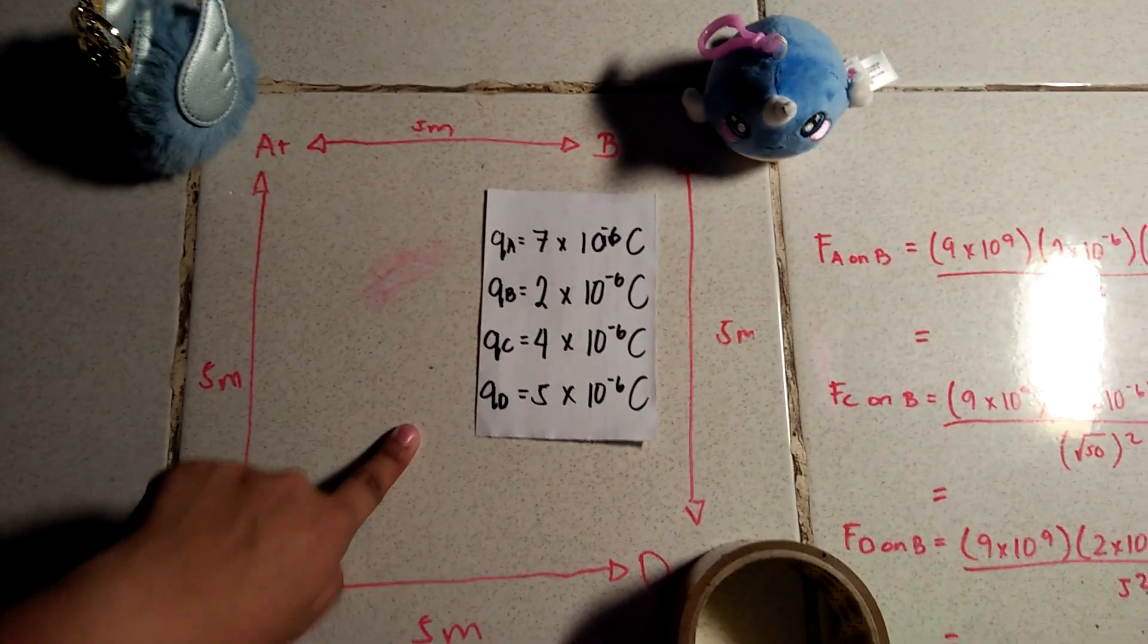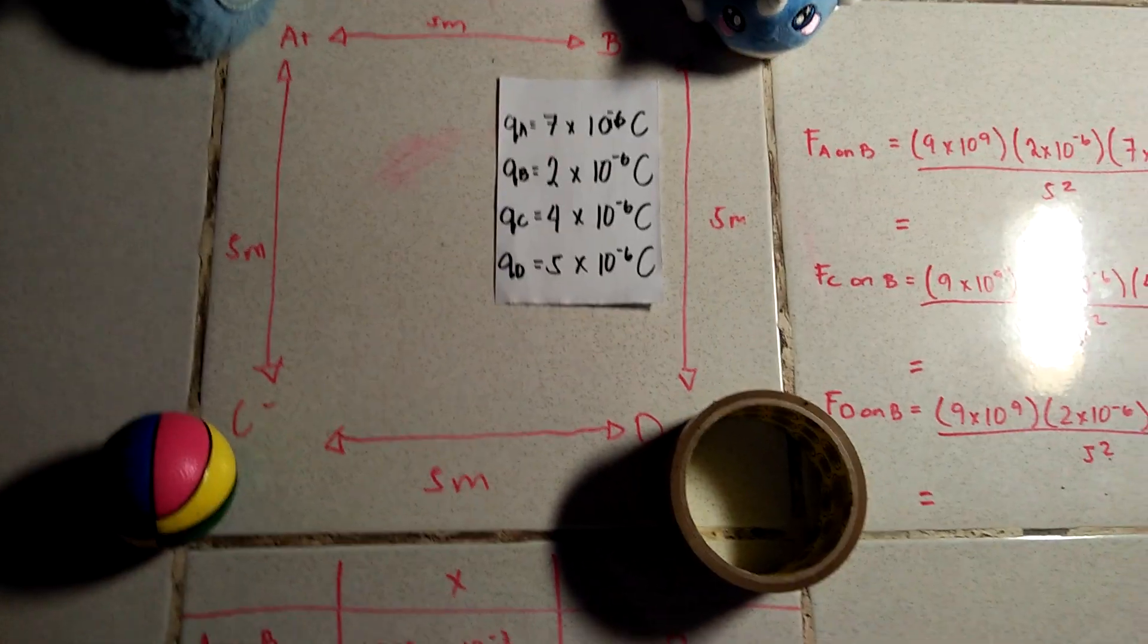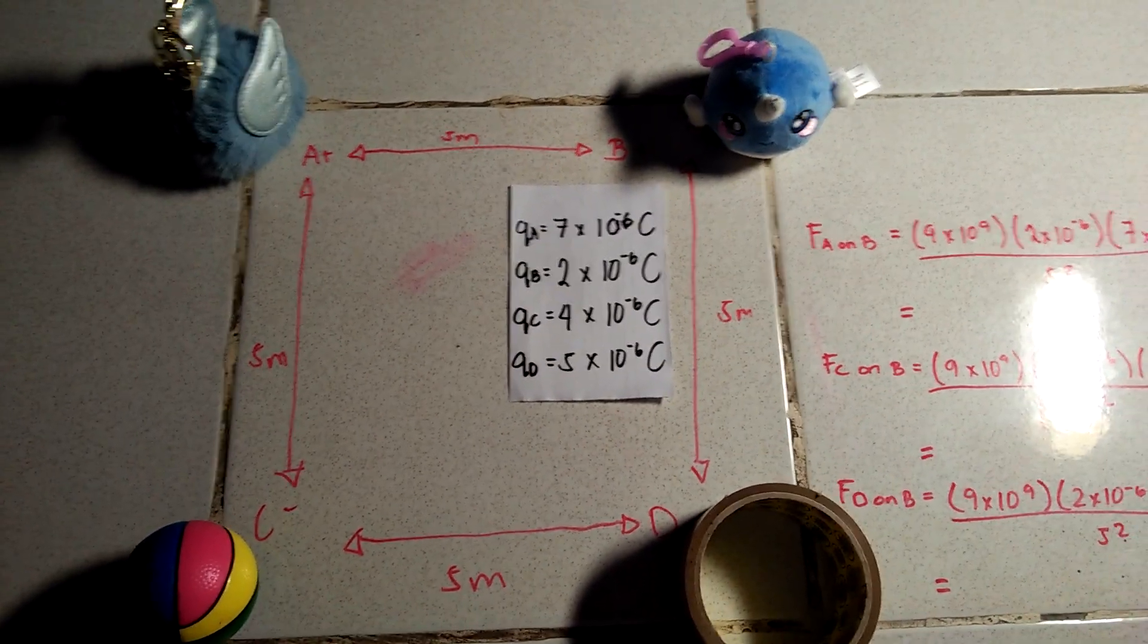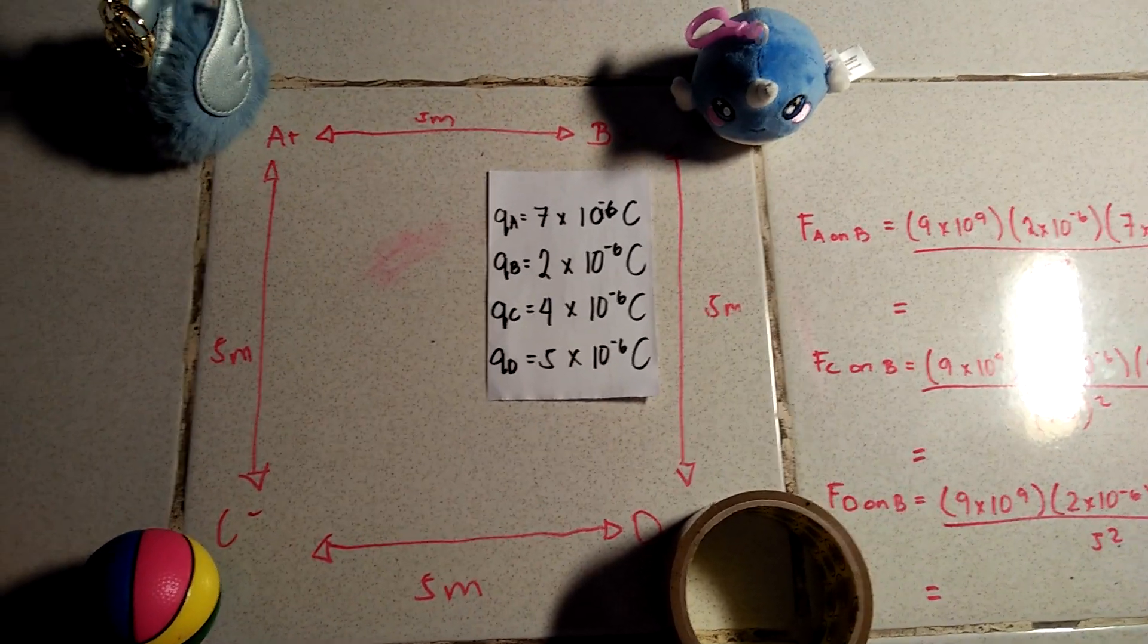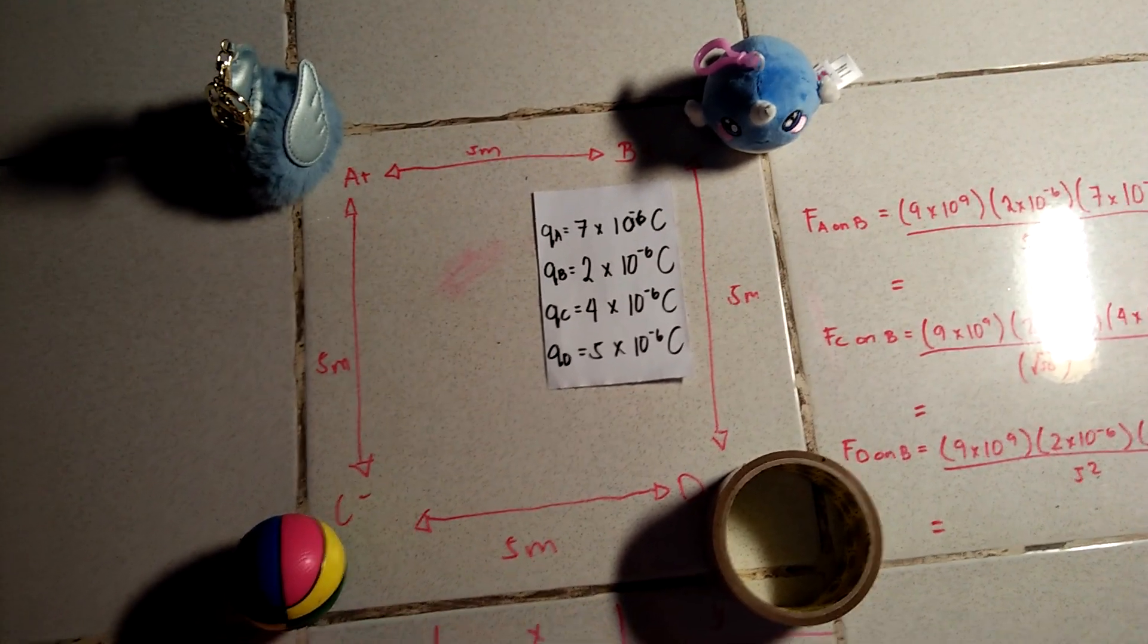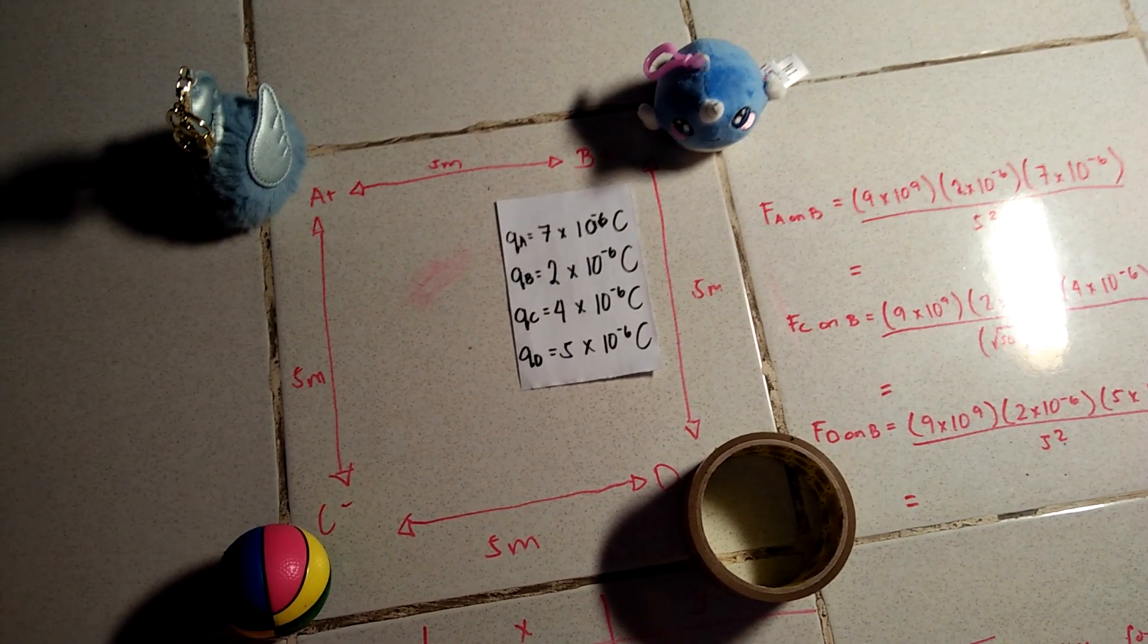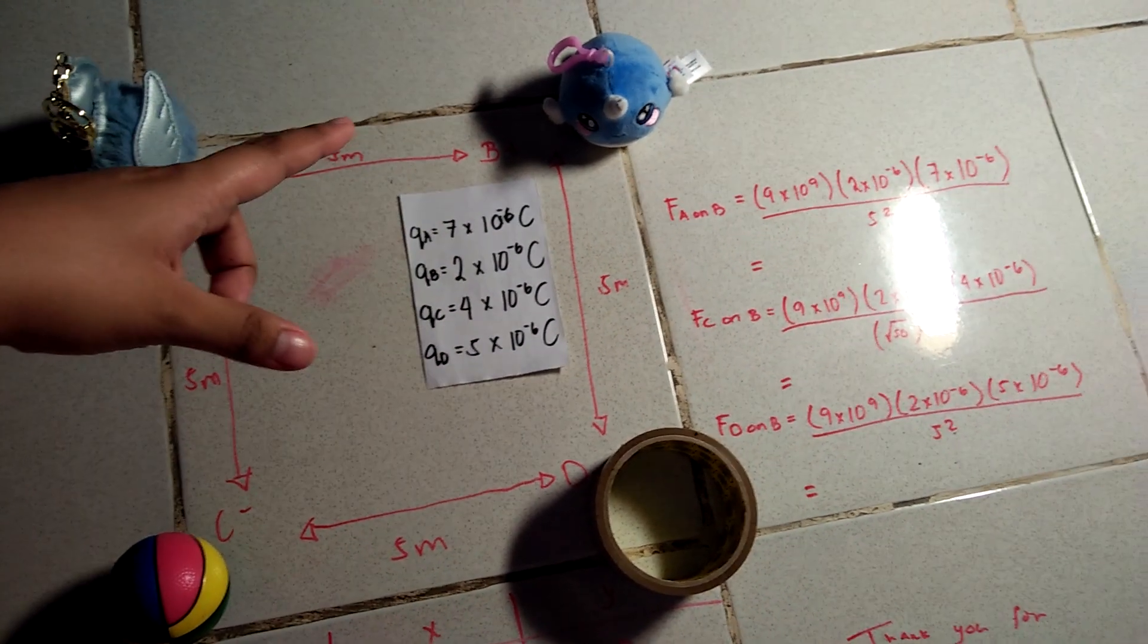So I'm sorry, I forgot to include the signs. But yeah, you get it. So the thing here is, to make things easier explaining this, we're going to find the forces or the resultant force acting on B, or this cute blue narwhal.